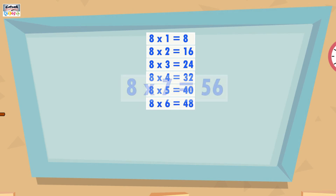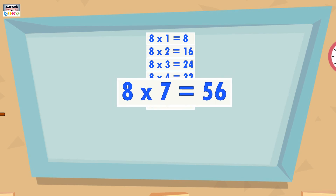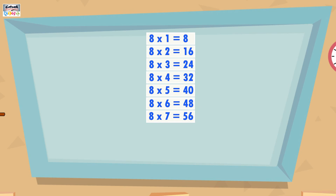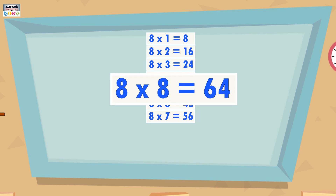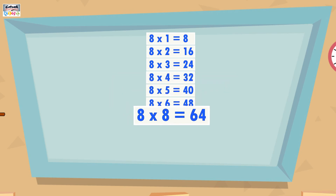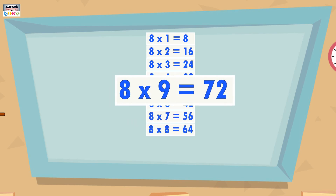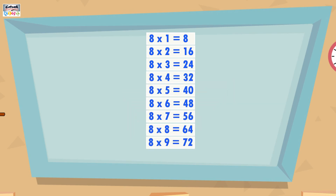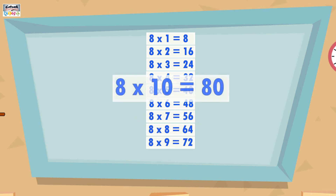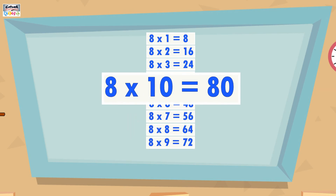8 sevens are 56, 8 eights are 64, 8 nines are 72, 8 tens are 80.